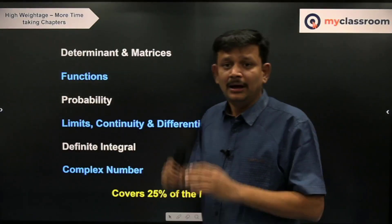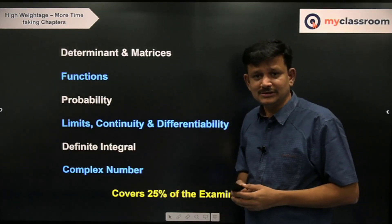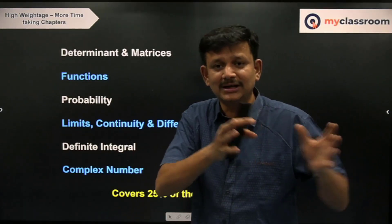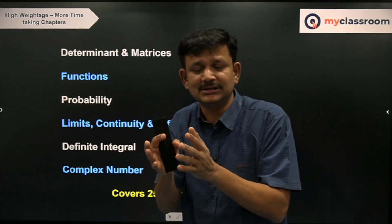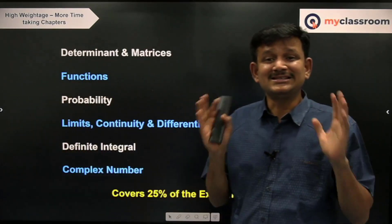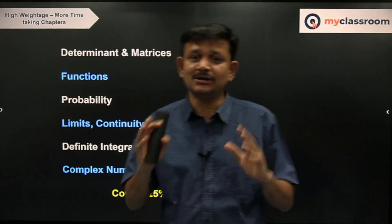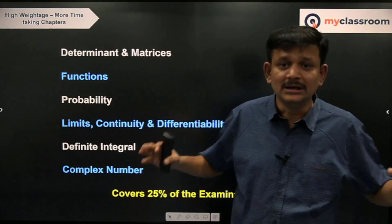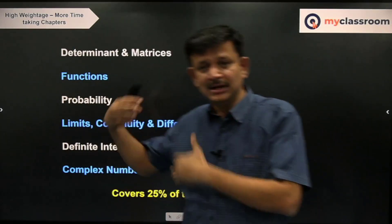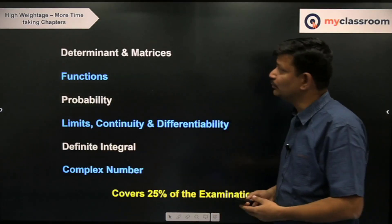So till now, 50% was covered in high-weightage chapters and 10% in low-weightage chapters — overall, 60% of the syllabus is already over. That means you are ready to score 60 marks. Now let us focus on the remaining 40 marks and how to get them.